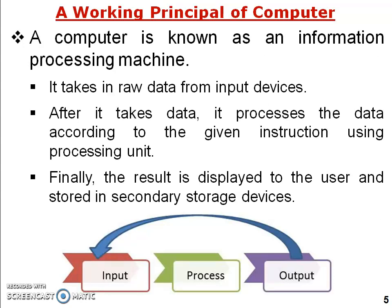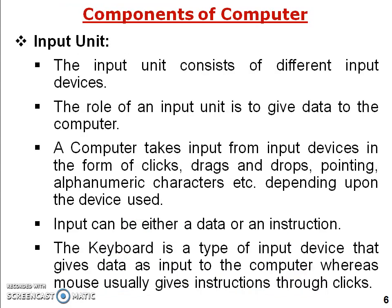The working principle of a computer: it takes raw data from the input device, then processes the data according to the given instructions using the processing unit — because the computer simply follows instructions given by the user or stored in the storage unit — and finally the result is displayed to the user and stored in the secondary storage device. The back arrow in the diagram represents feedback: if the output is not desired by the user, it is fed back to improve the input and get the desired result.